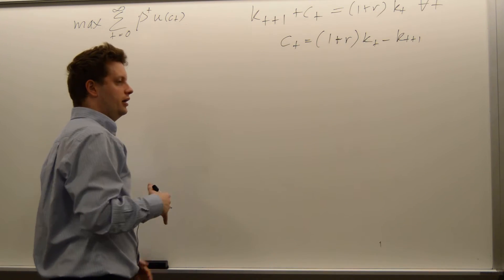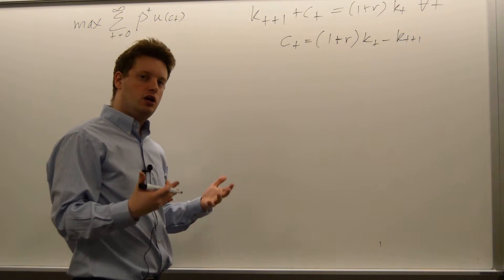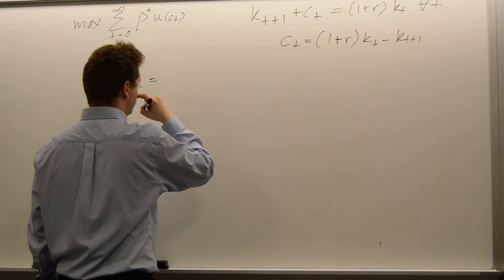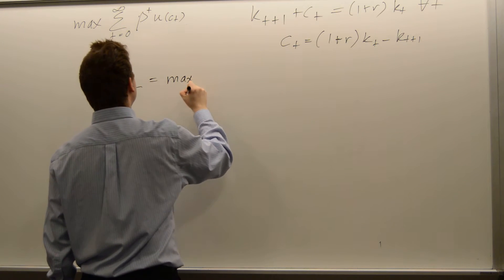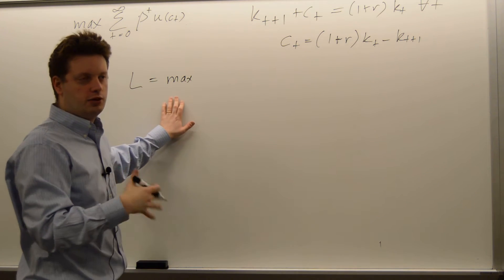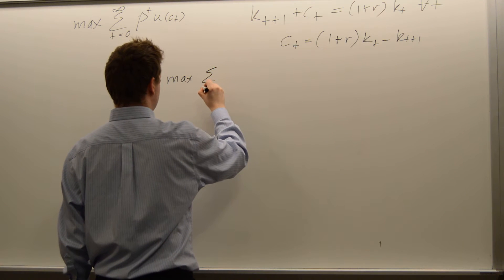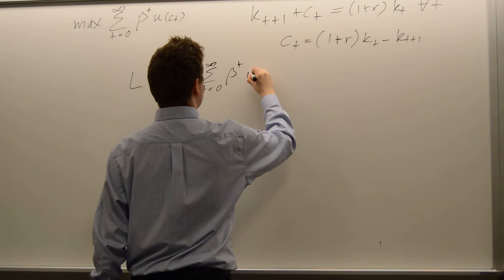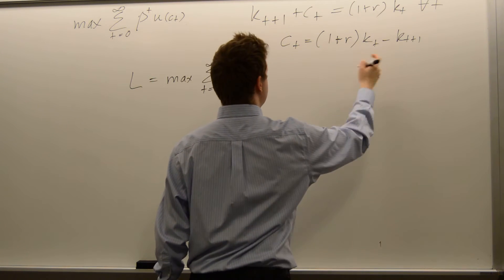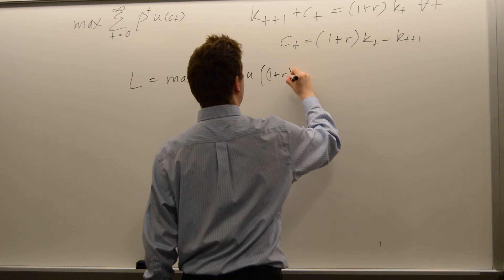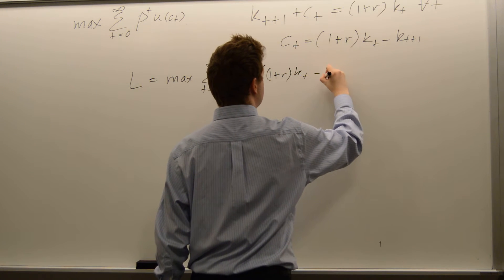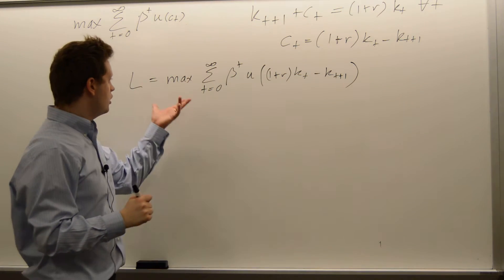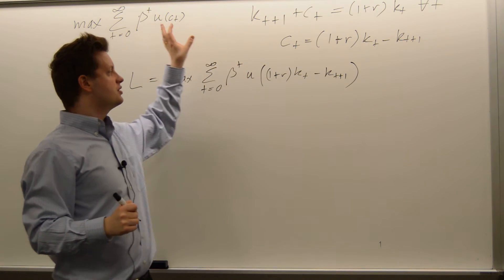Let me rewrite that in the way we would do it with the Lagrangian. So the Lagrangian will be equal in the first period to the maximum with respect to kt plus 1 for all periods — the sum from t equals 0 to infinity of beta to the power of t times u of 1 plus r kt minus kt plus 1. This is our maximization problem after the replacement of c.